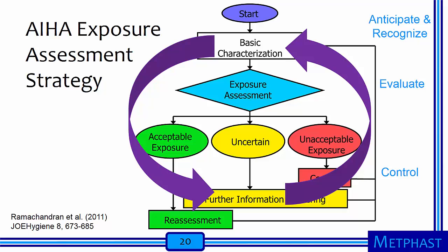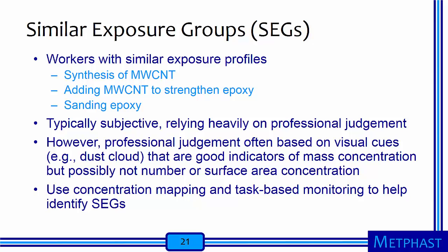After the basic characterization, we are ready to make measurements in the evaluation phase of the exposure assessment strategy. The first step is to group workers into similar exposure groups, or SEGs. Workers in a SEG have similar exposure profiles. For example, we can anticipate that workers who synthesize multi-wall carbon nanotubes will have similar exposures, but these will differ from those workers who add multi-wall carbon nanotubes to strengthen epoxy, or those who sand epoxy with carbon nanotubes embedded in it.